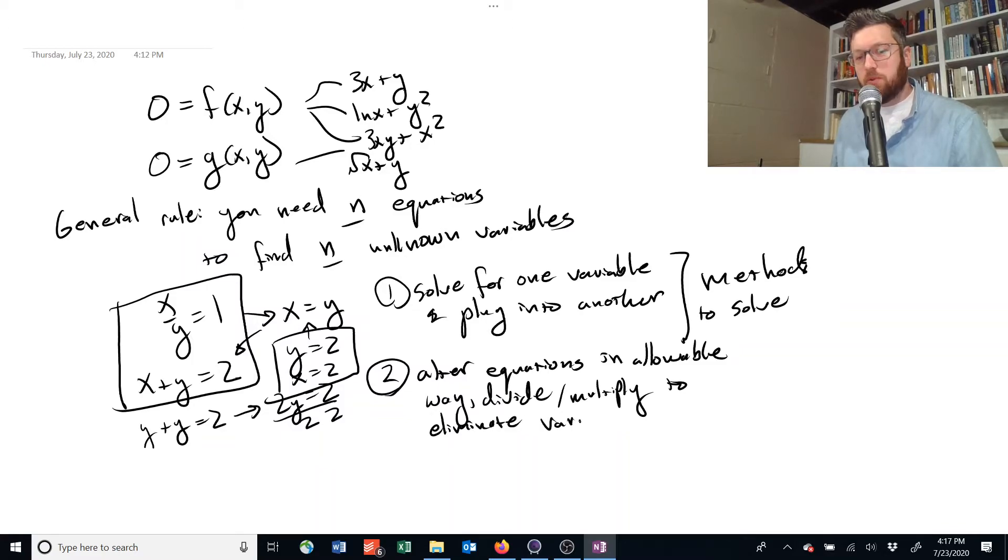So in both cases, what we're trying to do is go from having n equations with n unknown variables. Because we want to collapse that all down to, at the end of the day, one equation with one unknown variable. In the first system, we basically solved for x, and then we plugged that in so we no longer had x in the other equations. And then we ended up down here at the bottom with 2y equals 2. So that was one equation with one unknown. And then we worked backwards up the system.